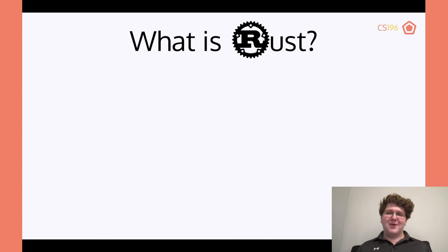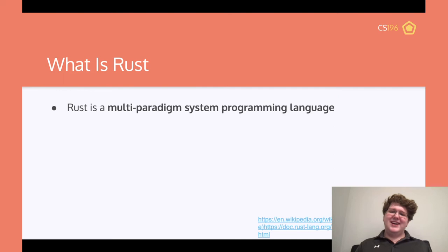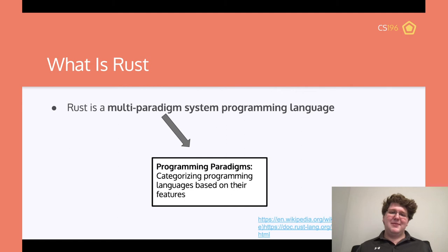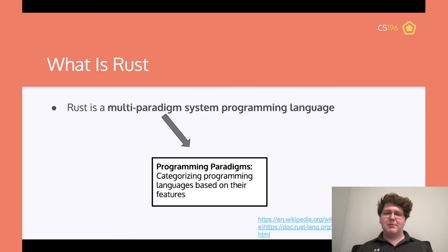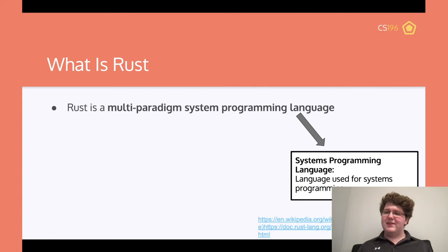Let's talk about Rust, the programming language. Rust is a multi-paradigm systems programming language. Programming paradigms categorize languages based on their features — some are imperative, some are object-oriented, some are functional. The multi-paradigm part means it can do multiple different things: there's functional Rust, object-oriented Rust, and imperative Rust, and you can use those in a combined manner.